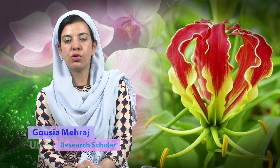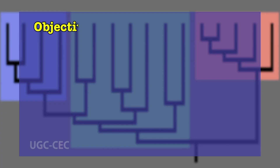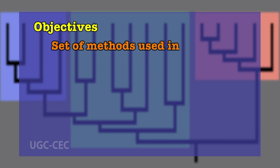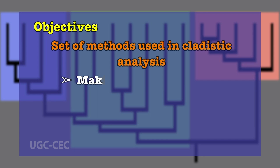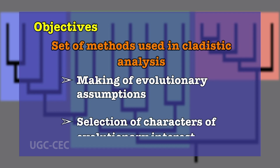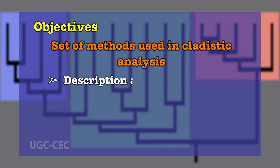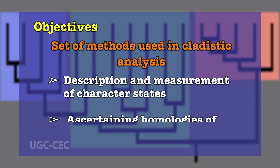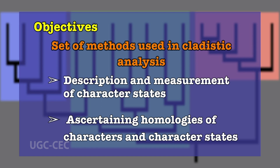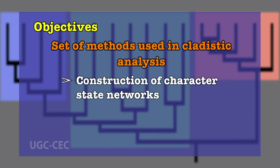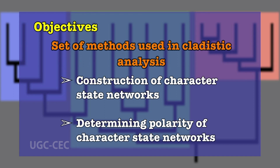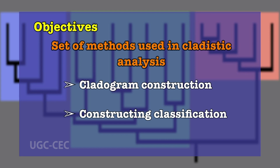Welcome, dear students. Today our topic of deliberation is methodology of cladistics. The objectives of today's deliberation are to describe the set of methods used in cladistic analysis: making an evolutionary assumption, selection of characters of evolutionary interest, description and measurement of character states, ascertaining homologies of characters and character states, construction of character state networks, determining polarity of character state networks, cladogram construction, and constructing classification based upon cladograms. Cladistic analysis is the main approach of classification used in contemporary evolutionary biology.